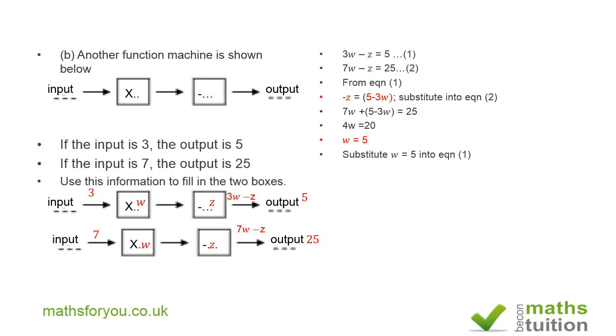Now if we substitute w is equal to 5 into equation 1, we end up with 15 minus z is equal to 5. And if we add z to both sides and subtract 15 from both sides, we end up with z is equal to 10. So w is 5 and z is 10 as required.